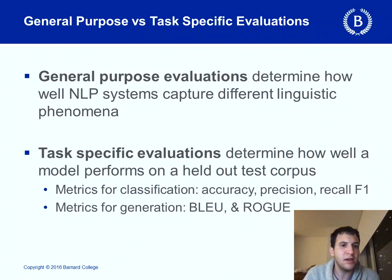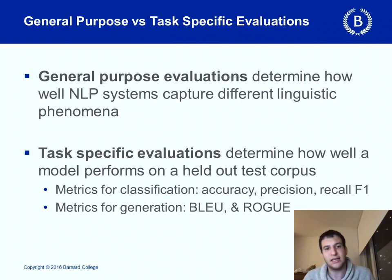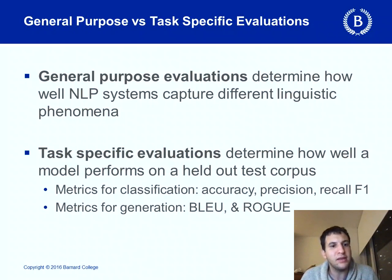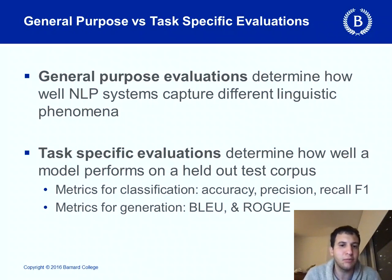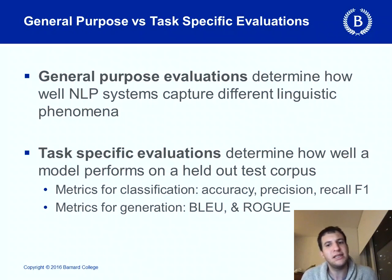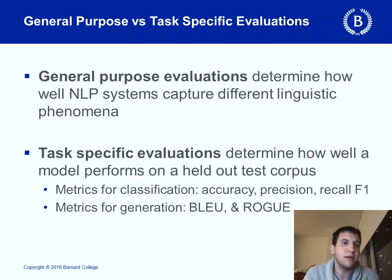Metrics for task-specific evaluations for classification problems often include accuracy, precision, and recall. To evaluate task-specific generation models, metrics like BLEU and ROUGE are often used. The distinction between general-purpose and task-specific evaluations is sometimes blurred.